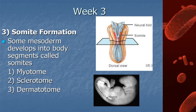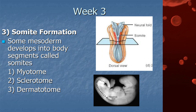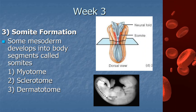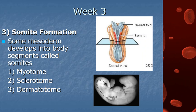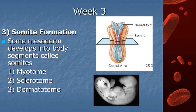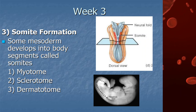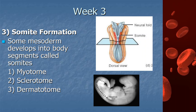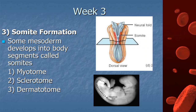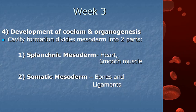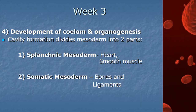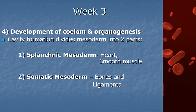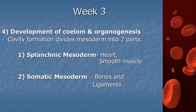Another process during week three is the formation of somites — body segments. Each somite consists of a myotome composed of muscle, a sclerotome composed of bone, and a dermatome composed of overlying skin. Also happening during week three is the development of the internal body cavity called the coelom and organogenesis — the formation of internal body organs such as the heart and blood vessels. This involves differentiation of endoderm as well as mesoderm: splanchnic mesoderm becomes the heart and smooth muscle, while somatic mesoderm becomes the bones and ligaments.